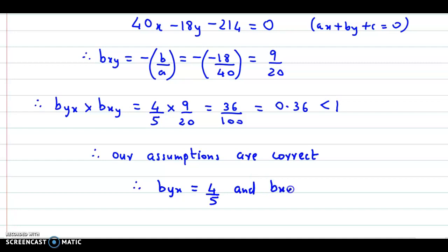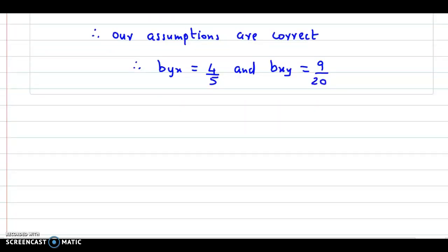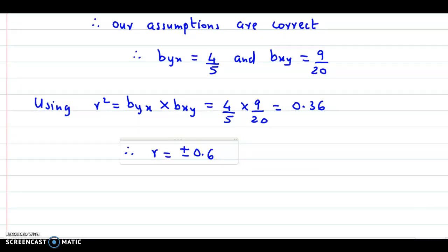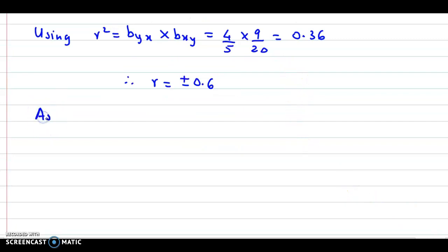Now we get r's value using the relation r square equals byx into bxy, which is 4 by 5 into 9 by 20. This value we calculated as 0.36. So therefore the value of r can be plus or minus 0.6. But the regression coefficients are positive, so r's value will also be positive, 0.6.